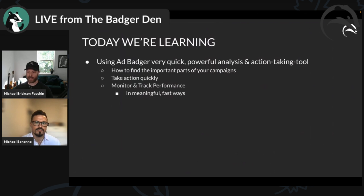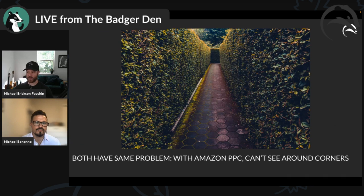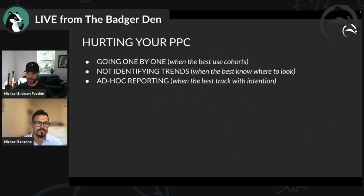Today we're going to learn how to use Ad Badger to navigate these scenarios — how to do great analysis, turn it into a great action-taking tool, monitor and track performance, take action quickly, and find the important parts of campaigns. We're going to solve this issue — we're going to be able to see around corners and zoom out.